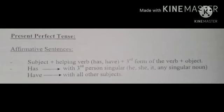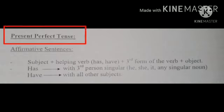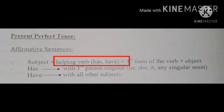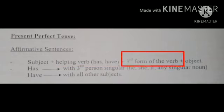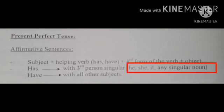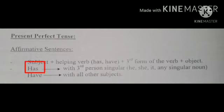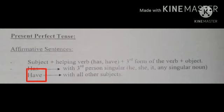Affirmative Sentences (سادہ جملہ) Formula: Subject + helping verb (has/have) + third form of the verb + object. Has is used with third person singular: he, she, it, and any singular noun. Have is used with all other subjects. Present Perfect Tense میں helping verb has اور have use ہوتے ہیں اور اس میں ہم verb کی third form کا استعمال کرتے ہیں۔ He, she, it اور کسی بھی singular noun کے ساتھ has کا use کرتے ہیں اور باقی سب subjects کے ساتھ have کا استعمال کیا جاتا ہے۔